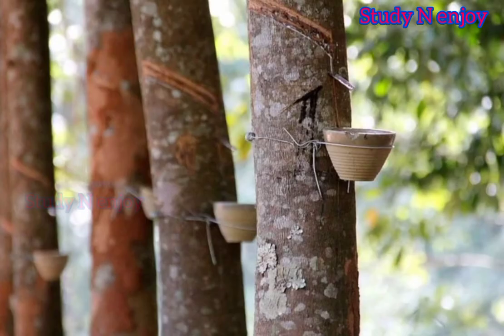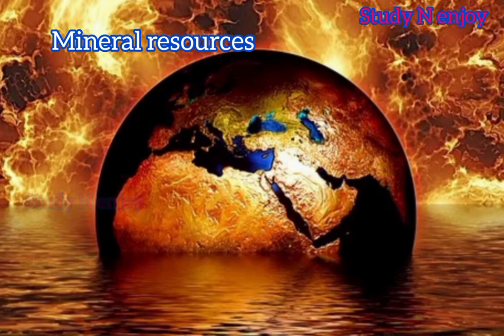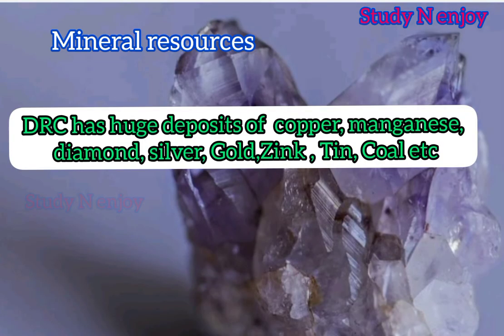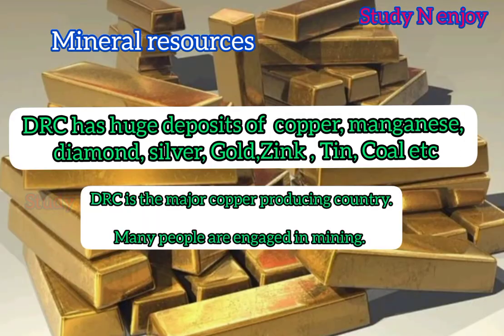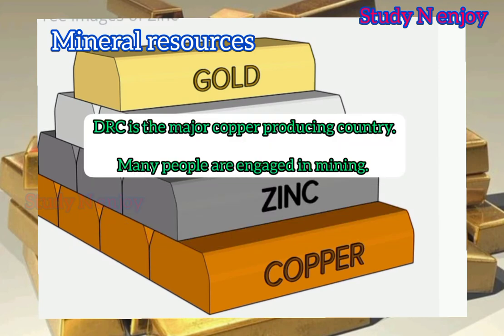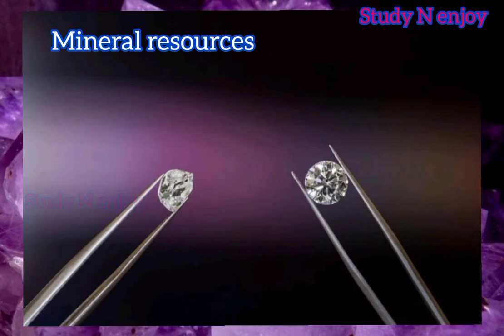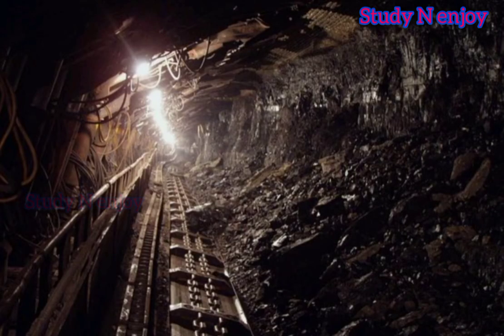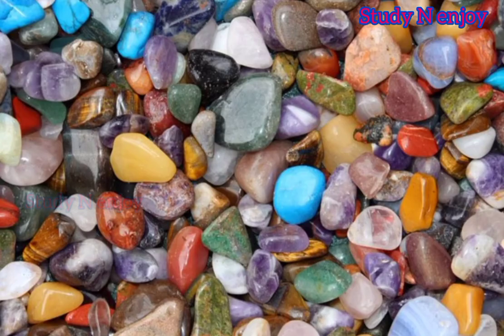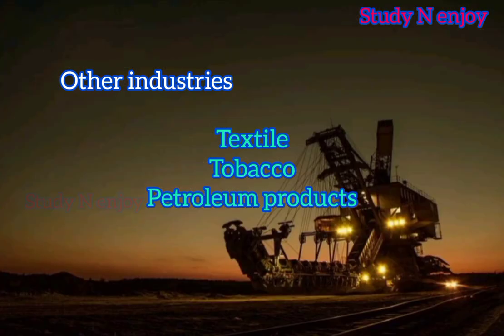The main cash crops include coffee, palm oil, rubber, cotton, sugar, tea, and cocoa. Rubber is found in abundance here, and people have established rubber factories; rubber tires are exported to other places. The south and east of the Congo River are filled with mineral resources. The southeastern region is very rich in mineral resources, with huge deposits of copper, diamonds, gold, silver, zinc, manganese, tin, and coal. The DRC is one of the major copper-producing countries in the world and is also famous for diamonds, so many people are engaged in mining.